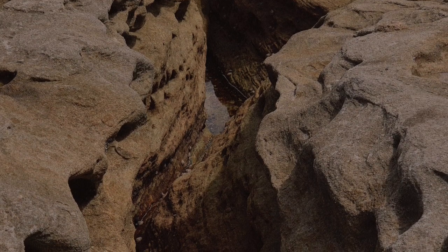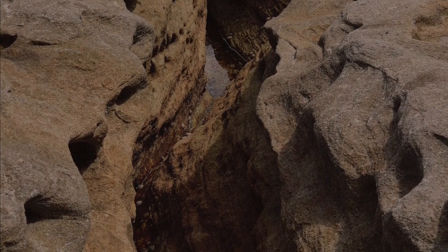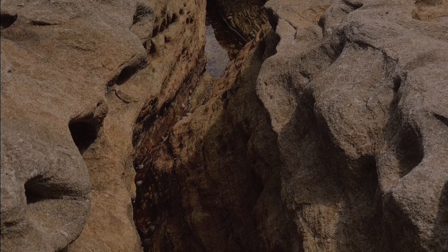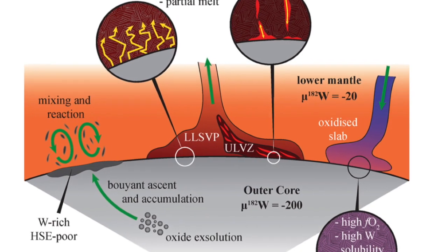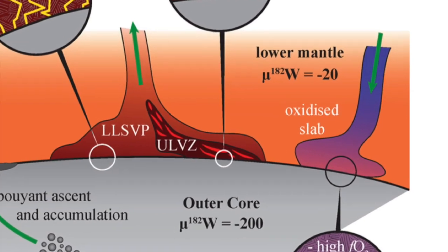It's also possible that a process known as subduction, which pulls rocks from the Earth's surface deep into the mantle, is pushing oxygen all the way down to the core mantle boundary. This could also account for the leak.